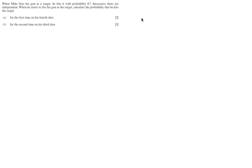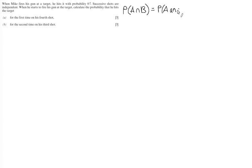The key thing in this question to note is that the successive shots are independent. That means we can use the fact that the probability of A intersect B — the probability of event A and event B both happening — is equal to the product of their probabilities: probability of A times probability of B.